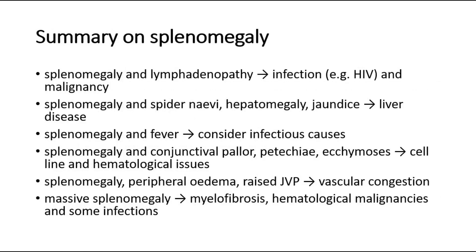Now let's take a look at a simplified summary of the differential diagnoses to consider in a case of splenomegaly. If there is splenomegaly and lymphadenopathy, think of infection and malignancy. If there is splenomegaly with spider nevi, hepatomegaly, and jaundice, think of liver disease. For splenomegaly and fever, consider infectious causes. For splenomegaly and conjunctival pallor, petechia, and ecchymosis, consider cell line and hematological issues. If there is splenomegaly, peripheral edema, and a raised JVP, think of vascular congestion. For massive splenomegaly, think of myelofibrosis, hematological malignancies, and some infections.